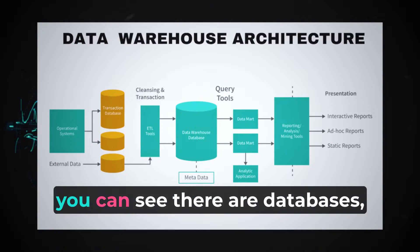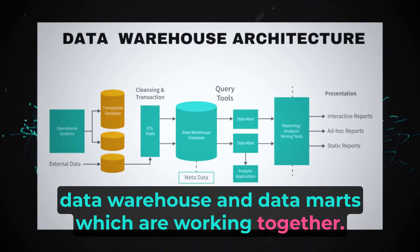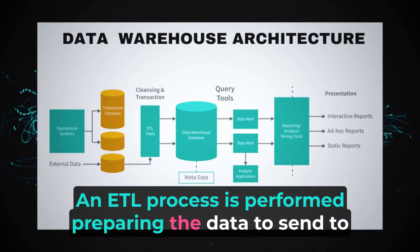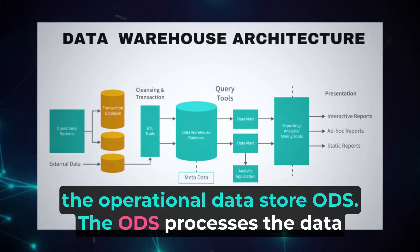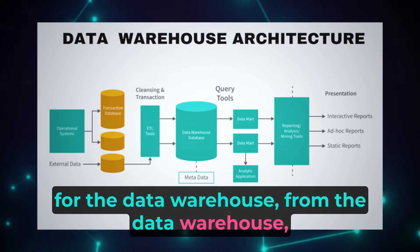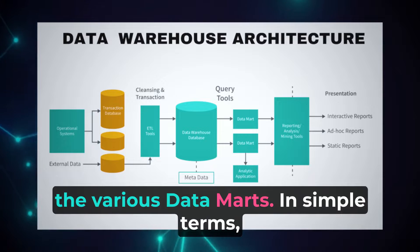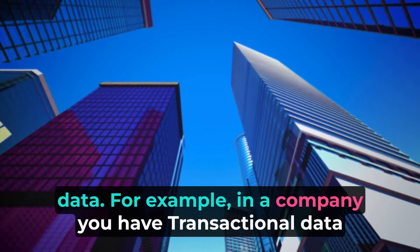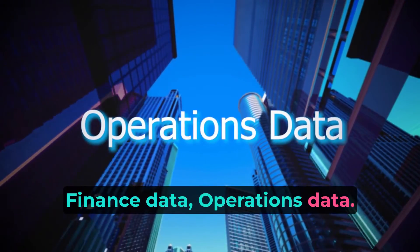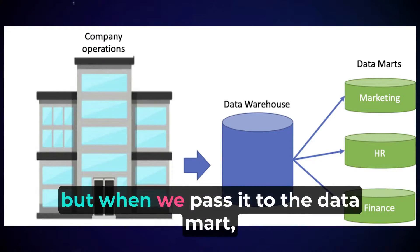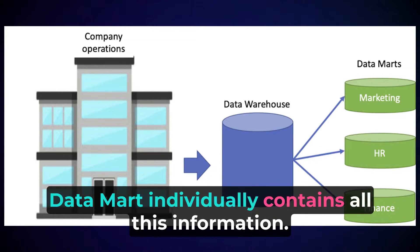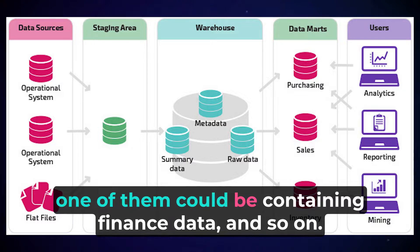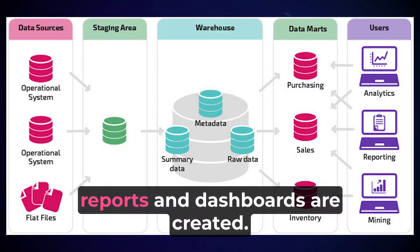In this architecture you can see databases, data warehouses, and data marts working together. Each database represents a single transactional source. An ETL process is performed to prepare data for the Operational Data Store (ODS), which then processes the data for the data warehouse. From the data warehouse, subject-specific limited data sets are fed to various data marts. In simple terms, data marts are small storages containing different types of data — for example, one data mart could contain operational data, another sales data, another finance data. Finally, reports and dashboards are created from the data marts.